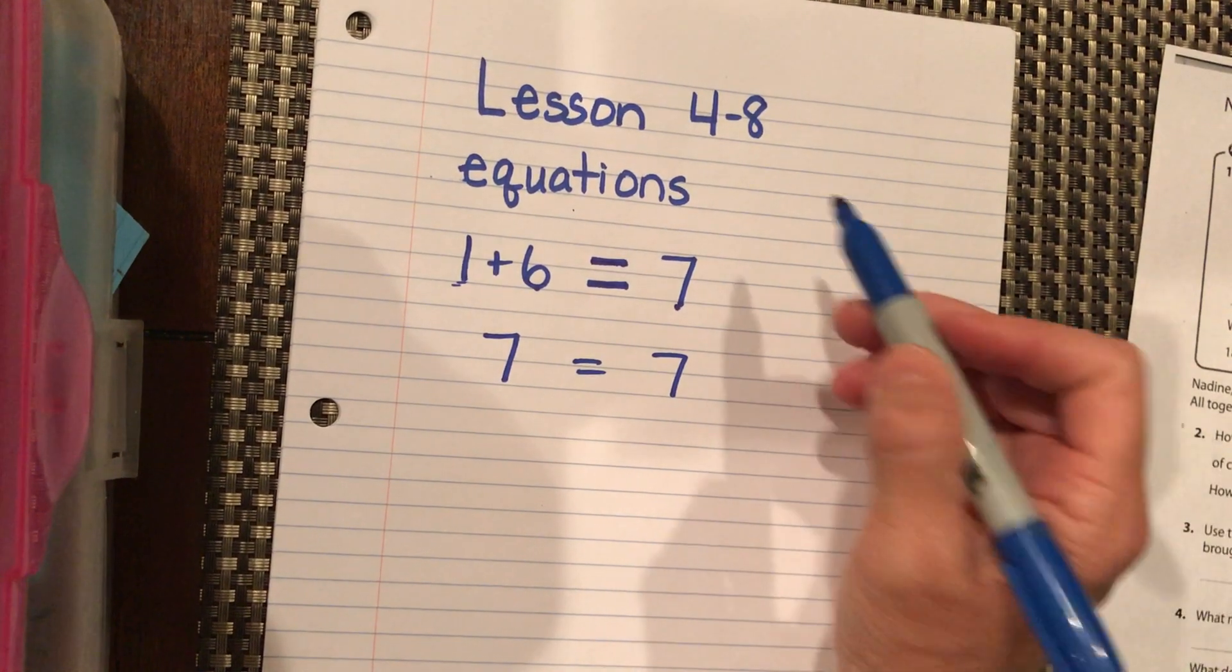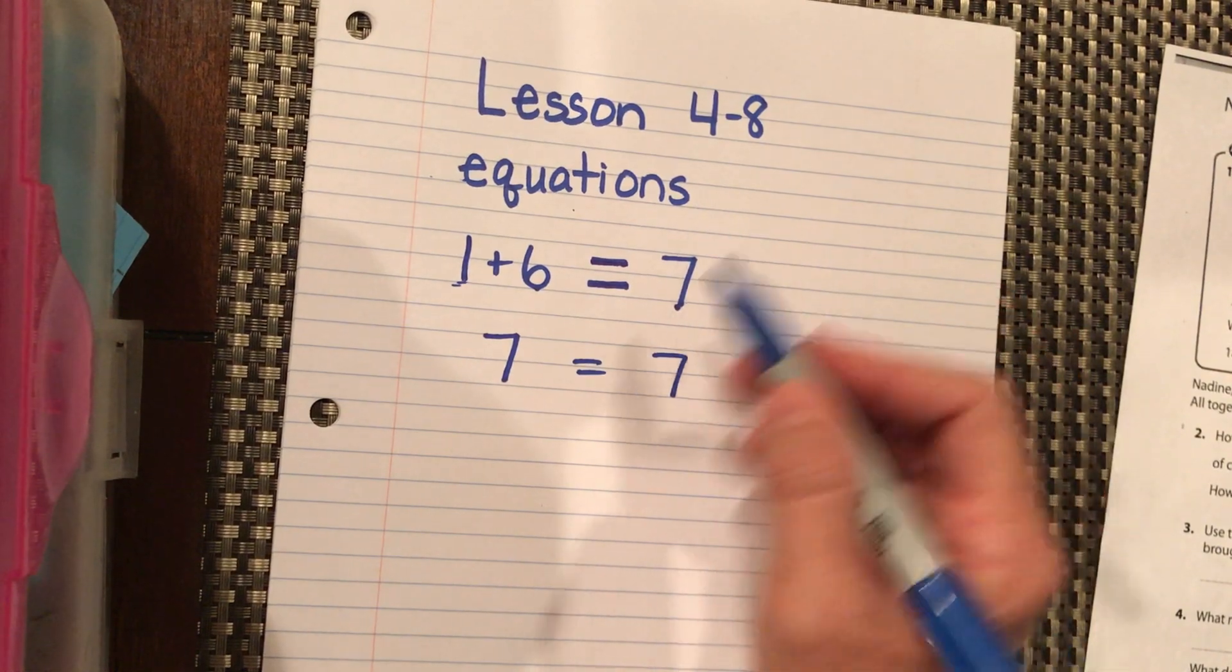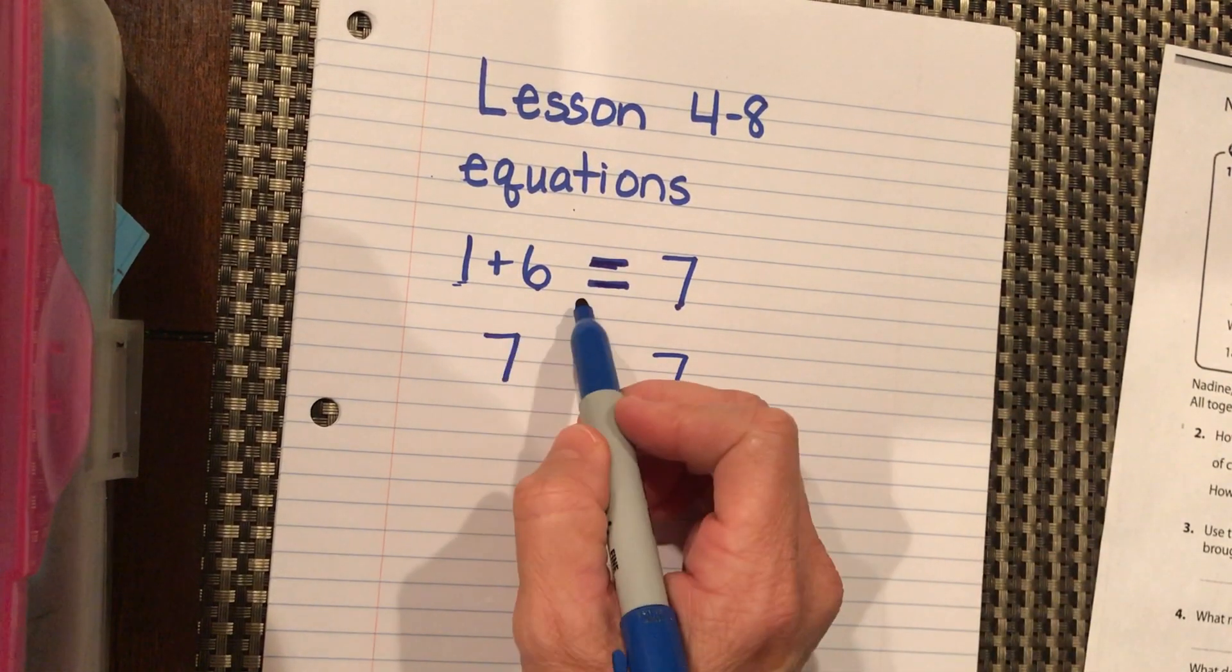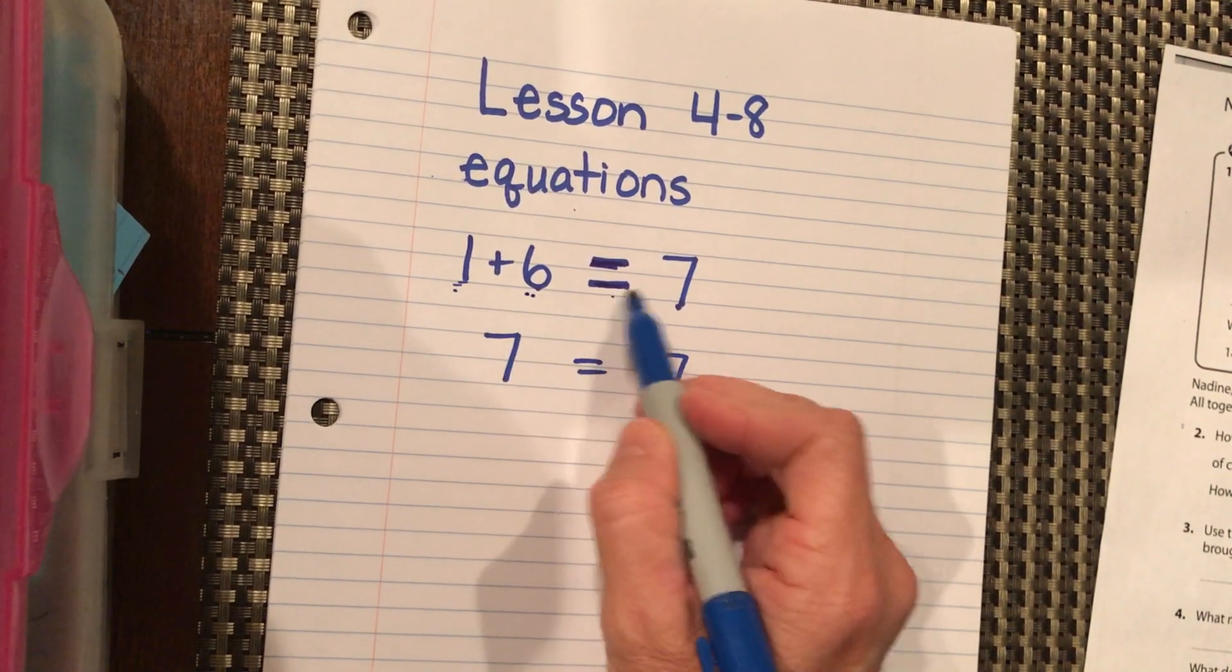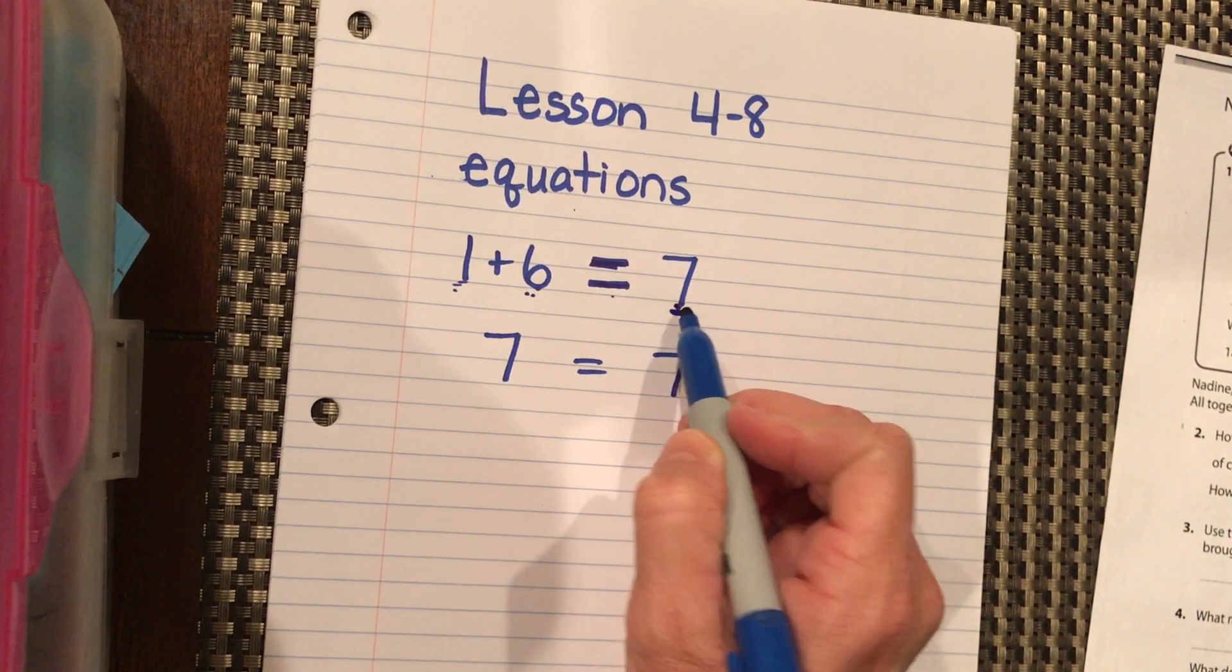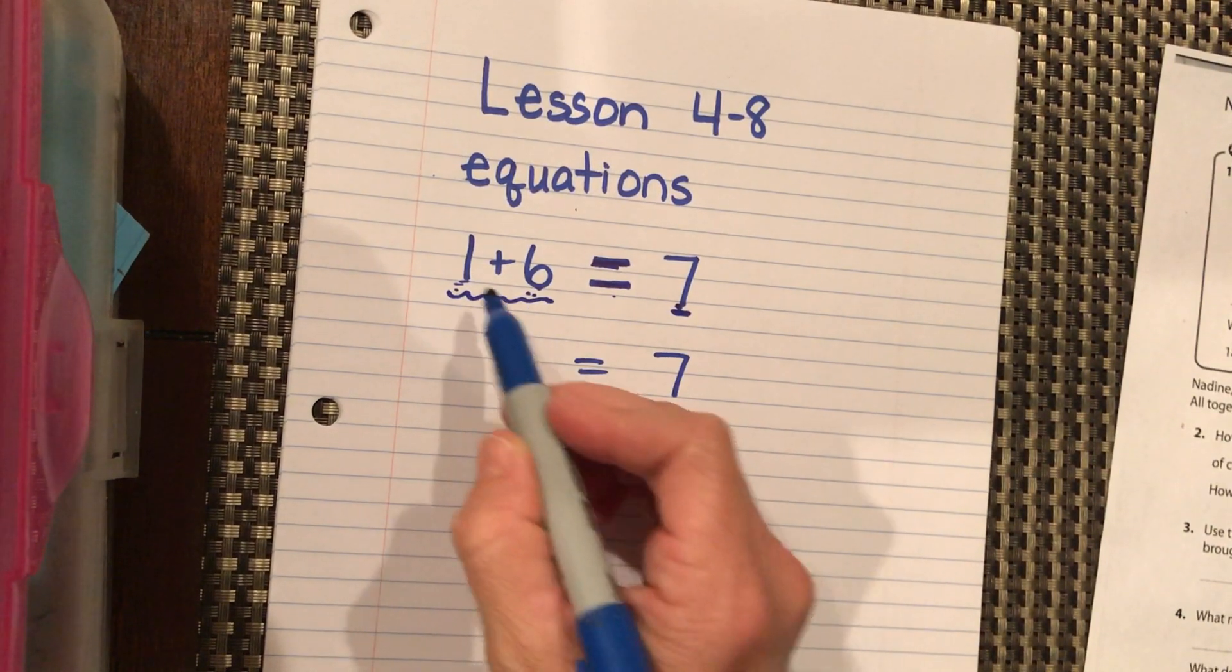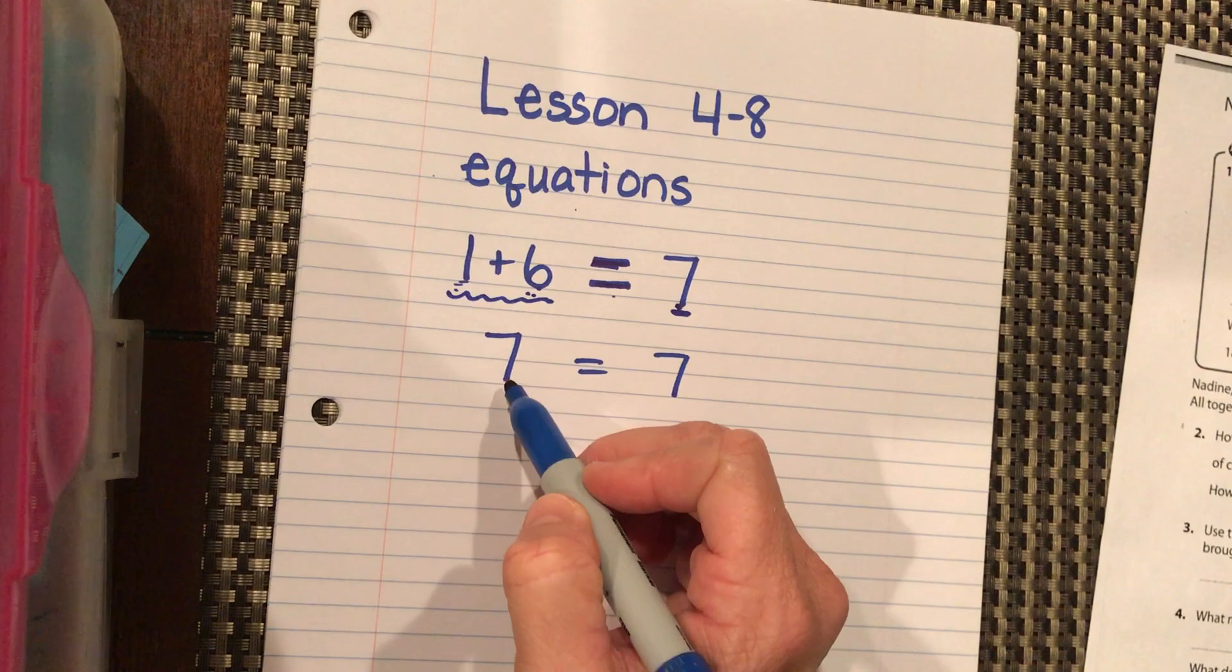Okay, we're going to do lesson 4-8, which is equations. This equal sign we understand now that we're in third grade doesn't just mean 1+6 and here's where we write our answer. It means that this 7 has the same value as what's on the other side, 1+6.